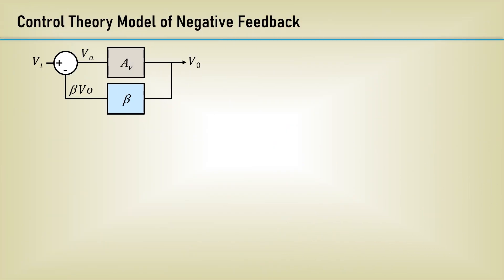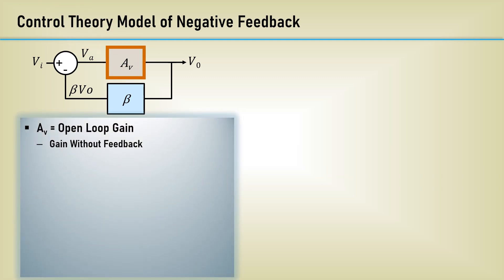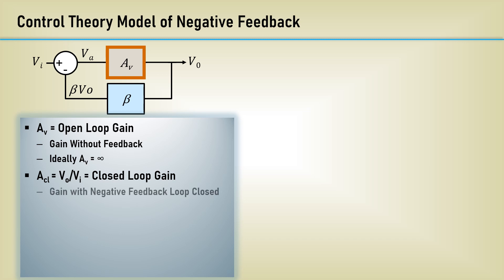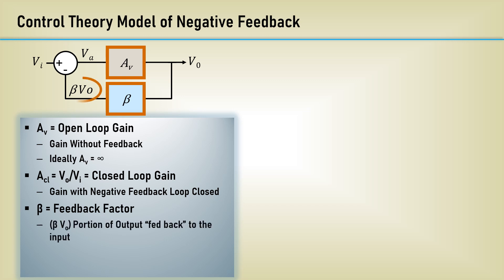Here is a control theory model of an amplifier with negative feedback. A sub V is the open loop gain of the amplifier — the gain without feedback. Ideally, this gain would be infinite. We want to determine the closed loop gain of the negative feedback system, which is the ratio of the output voltage V sub O to the input voltage V sub I. The block labeled beta is the feedback factor, often a set of resistors performing voltage division that programs the gain of the amplifier. Beta times V sub O is the portion of the output fed back to the input. A sub V times beta is the gain around the feedback loop.